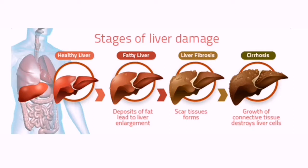What are the early signs of liver damage? Signs and symptoms of liver disease include skin and eyes that appear yellowish (jaundice), abdominal pain and swelling, and swelling in the legs and ankles.